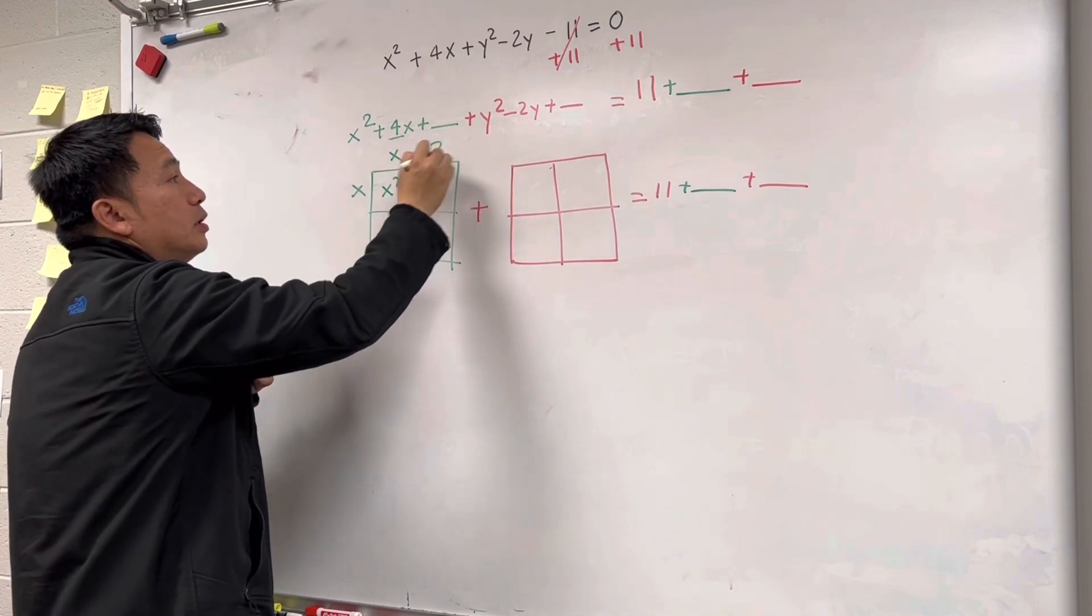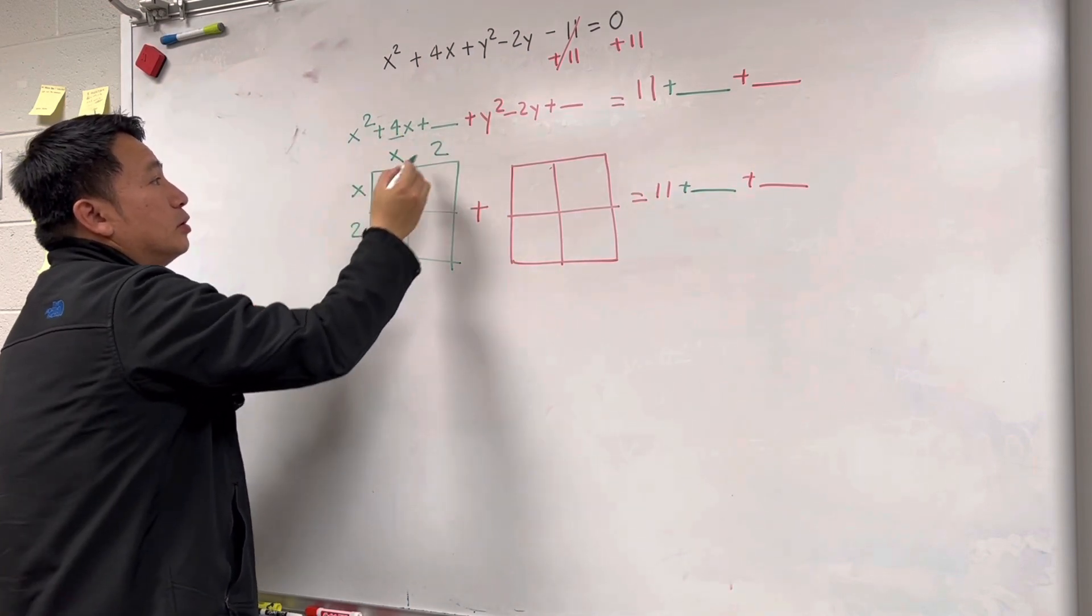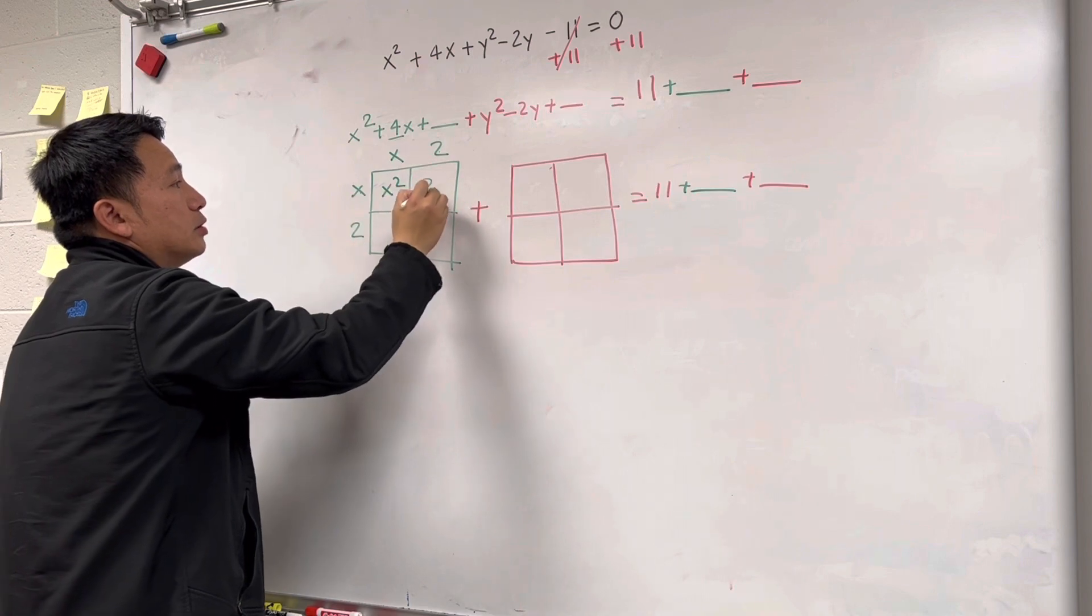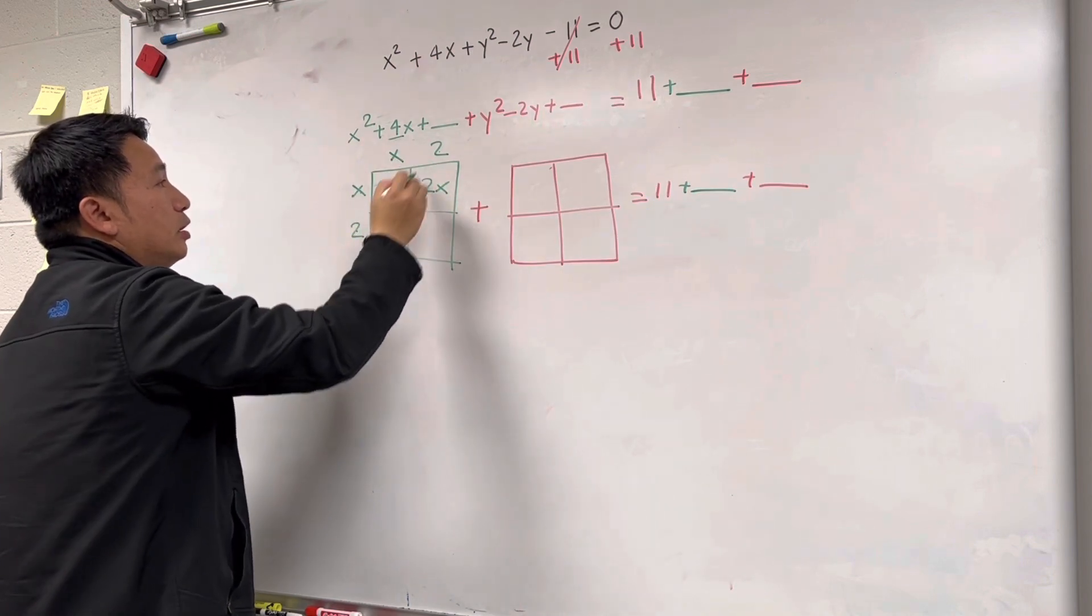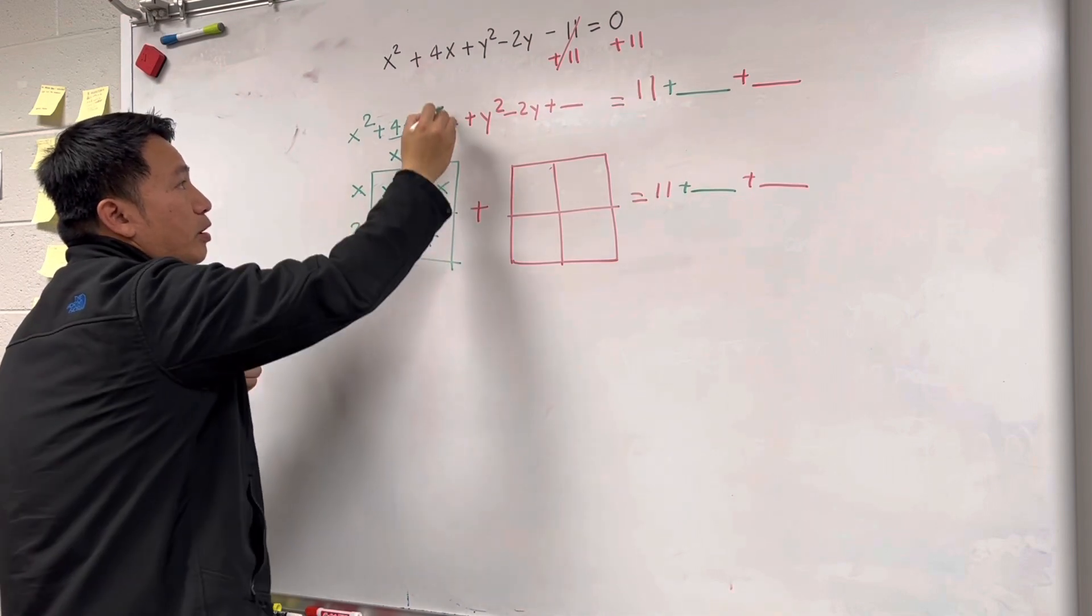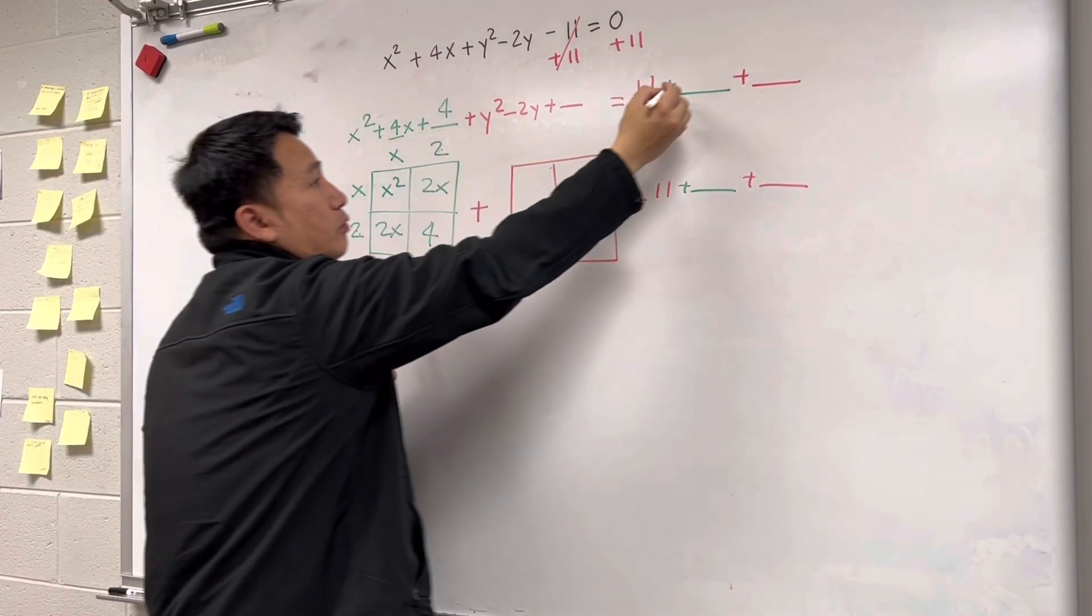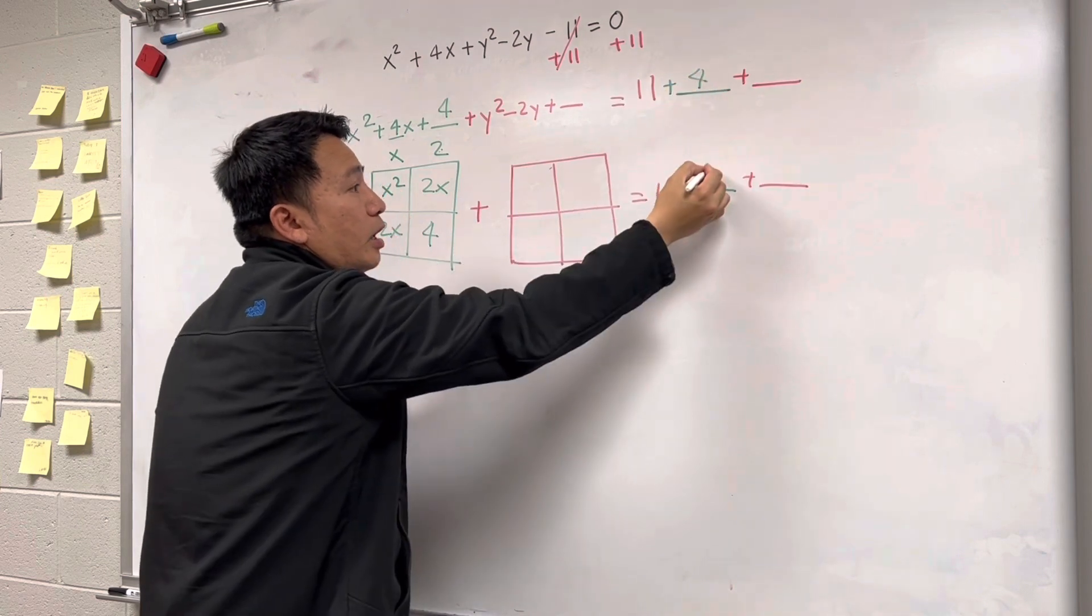So it's going to be 2 and 2. So 2 times x is 2x, and then x times 2 is 2x, and then 2 times 2 is 4, right? So 4 will be up here and will be right here and bring it down.